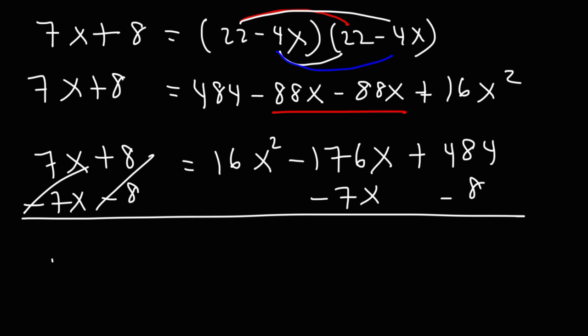So we're not going to have anything left over on the left side. On the right side, we're going to have 16x squared minus 183x, and then 484 minus 8, that's positive 476.